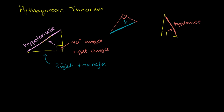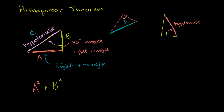Once you have identified the hypotenuse, let's say that has length c. So c is equal to the length of the hypotenuse. Let's call this side over here a, and let's call this side over here b. The Pythagorean Theorem tells us that a squared — the length of one of the shorter sides squared — plus the length of the other shorter side squared, is going to be equal to the length of the hypotenuse squared.